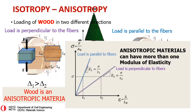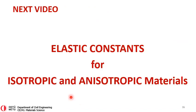Looking at the stress-strain diagrams for wood loaded parallel to the fibers versus perpendicular to the fibers, we obtain two different slopes. Parallel to fibers gives a steeper slope — a higher modulus of elasticity — while perpendicular to the fibers gives a higher strain for the same stress and therefore a lower modulus of elasticity. That concludes our discussion of isotropy and anisotropy. In our next video, we will be looking at elastic constants for isotropic and anisotropic materials.